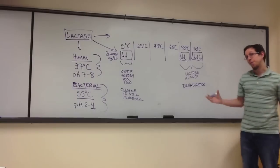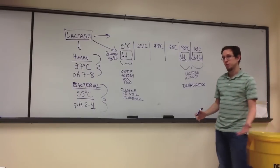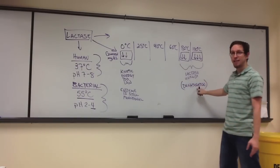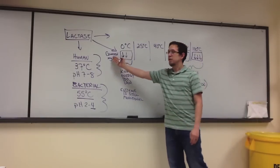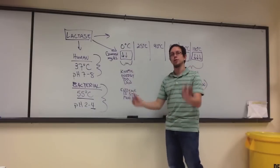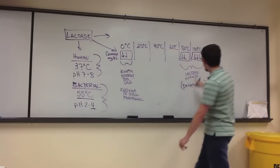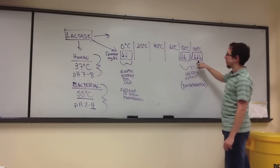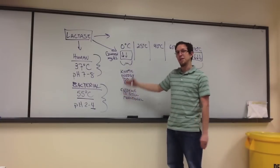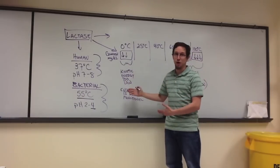This process is called denaturation. And when the enzyme unfolds, it's no longer functional. So now, I no longer have functional lactase, which means it can't speed up the reaction whereby lactose is hydrolyzed into glucose and galactose. So I see a drop in activity here because of denaturation. I see a drop of activity here because the kinetic energy is too low.